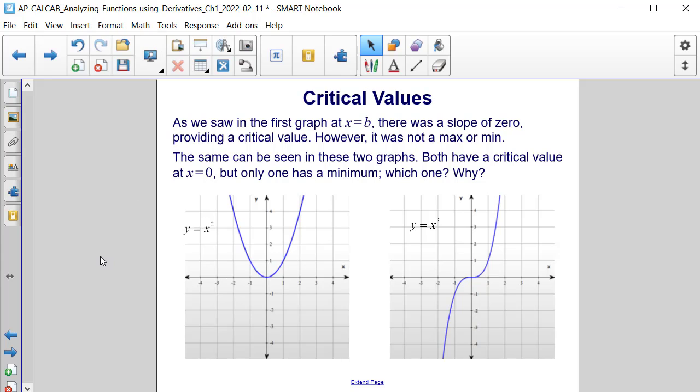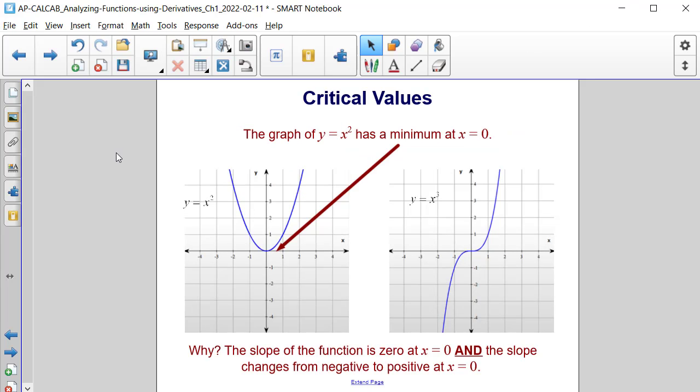Both have a critical value at x equals 0, but only one has a minimum. Which one is it, and why? The graph of y equals x squared has a minimum at x equals 0. Why?